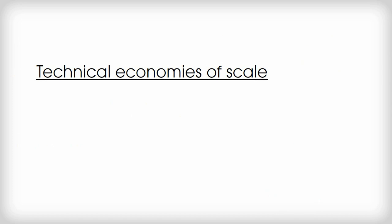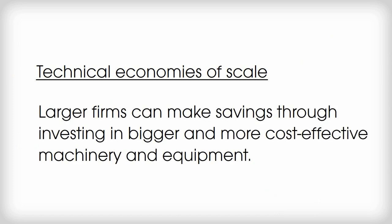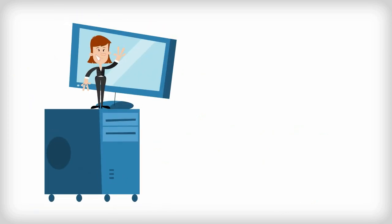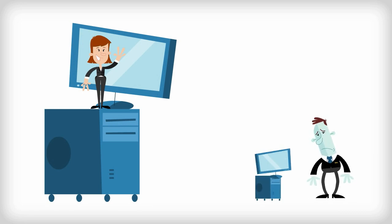Let's quickly look at what we mean by technical, specialisation, and purchasing economies of scale. First, technical economies. Larger firms can make savings through investing in bigger and more cost-effective machinery and equipment. For example, sophisticated IT systems to collate and process data can be a way to improve efficiency. However, this technology is probably only affordable to businesses operating on a certain scale.